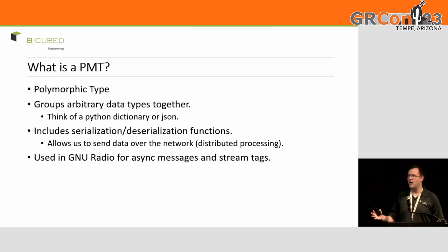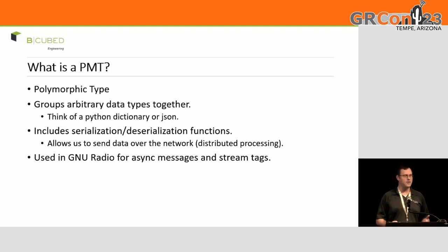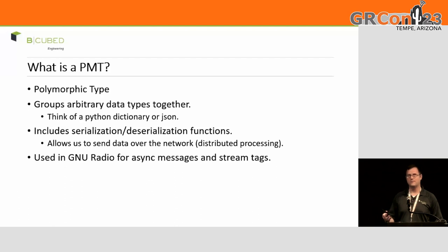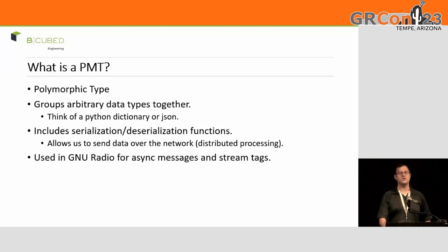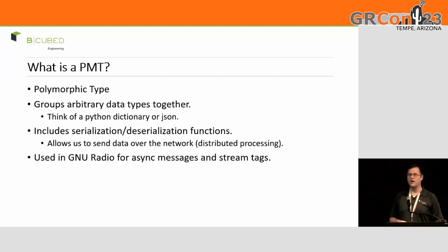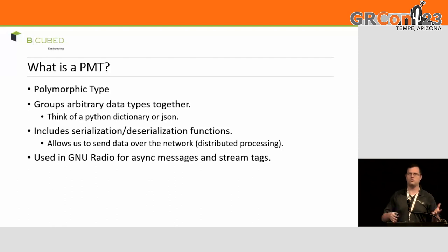For those of you who don't know or have blocked it from your memory: PMT stands for polymorphic type, and it allows us to group arbitrary data together, much like what you can do in JSON or a Python dictionary. The problem is that C++, being a strongly typed language, doesn't let you create variables that house random or unknown types. So this was an effort to produce that kind of type in C++. It also includes serialization and deserialization code so you can transmit data over the network. The ZMQ blocks will convert PMTs for you and send them on the other side so you can keep that metadata with you. In GNU Radio, these are primarily used for asynchronous messaging between blocks — any message block is working with PMTs — and for stream tags. It is a standalone library; it's part of GNU Radio, but you could use it outside of that.